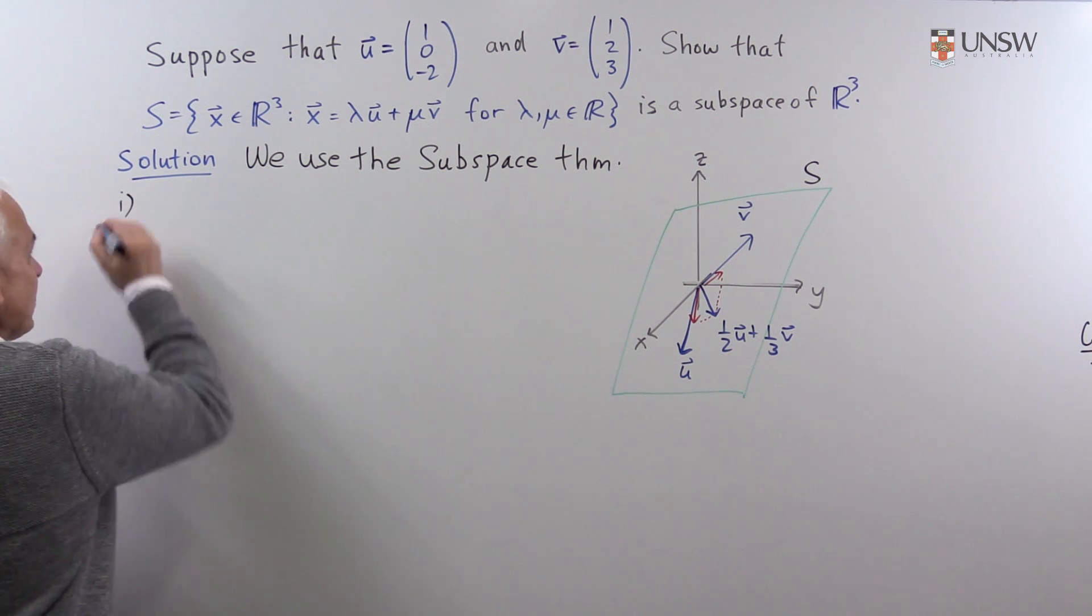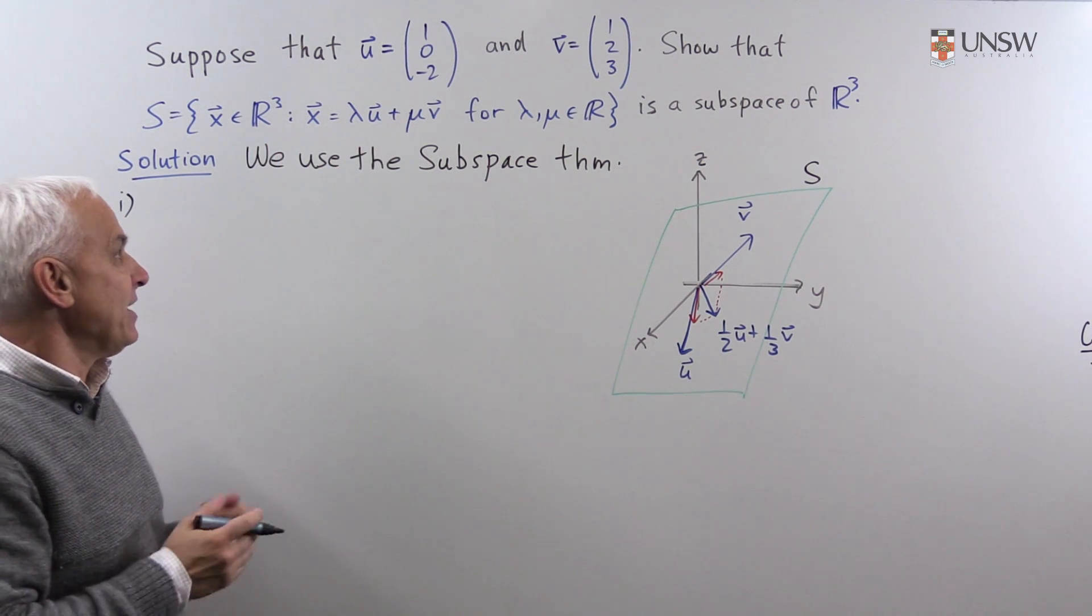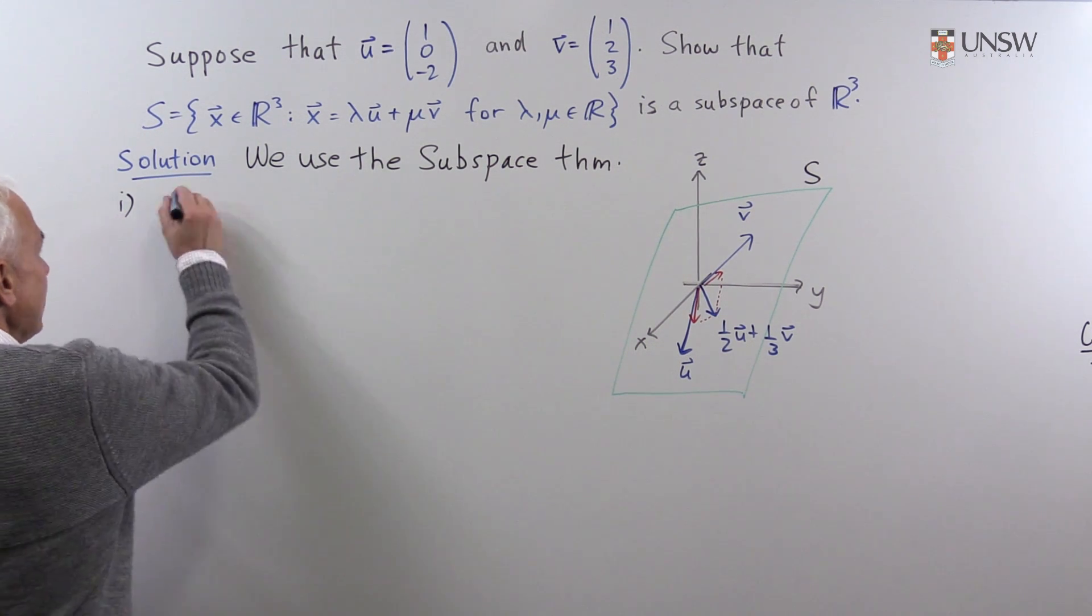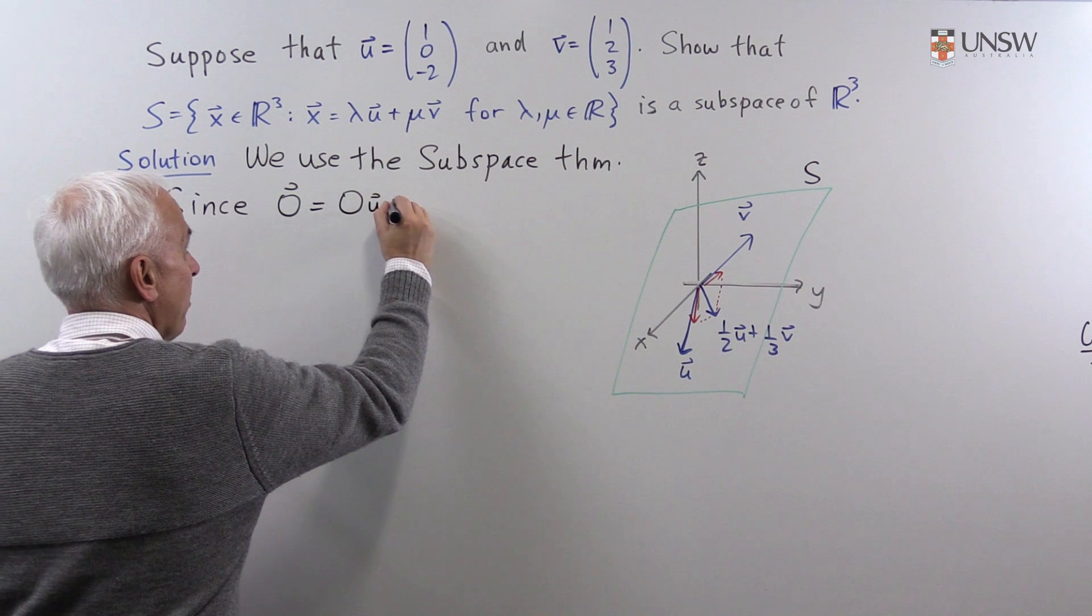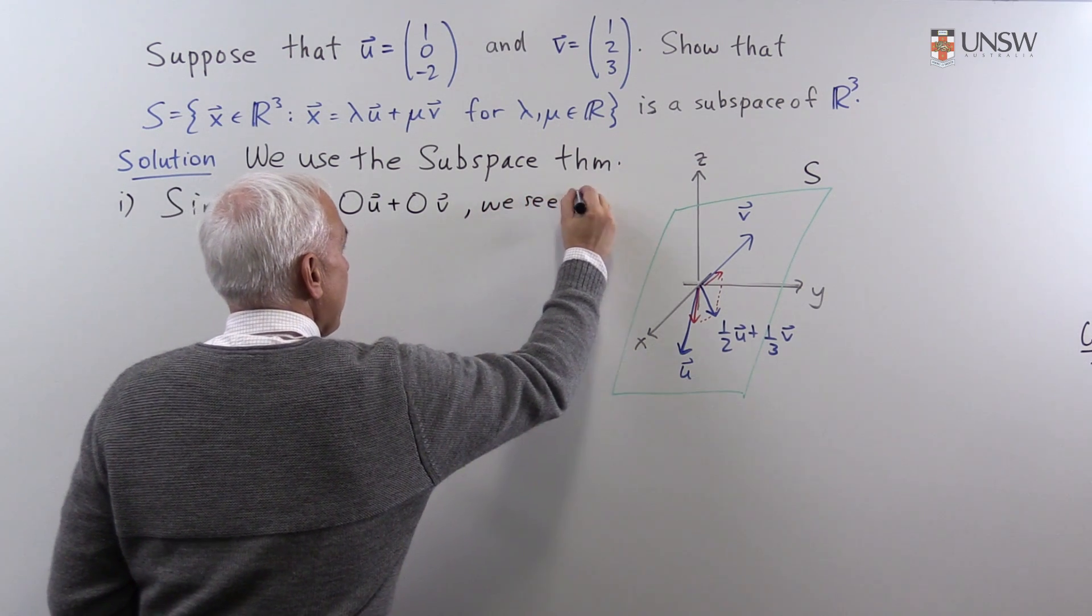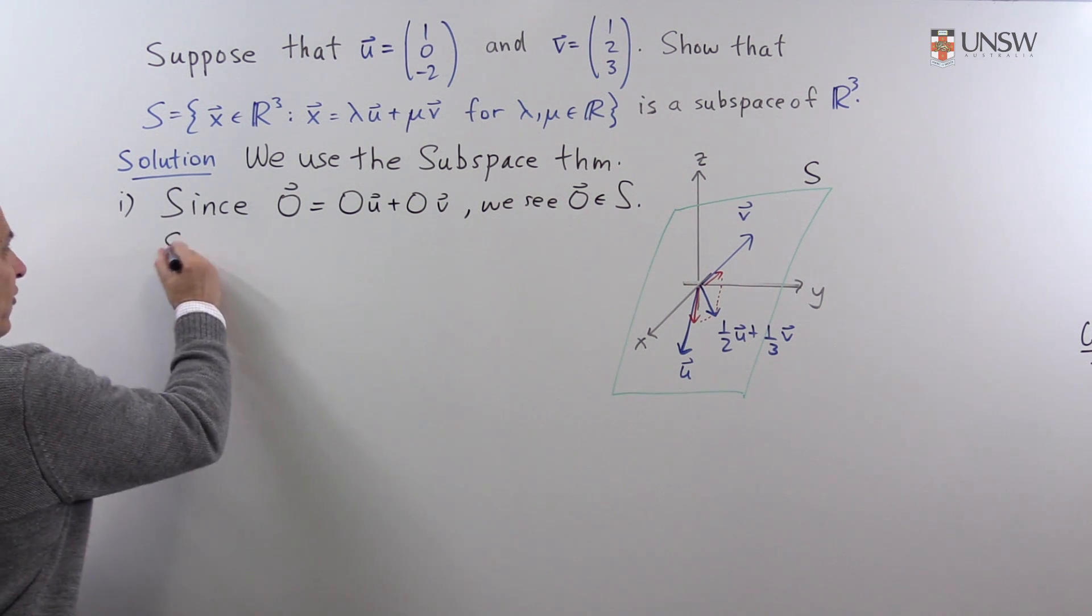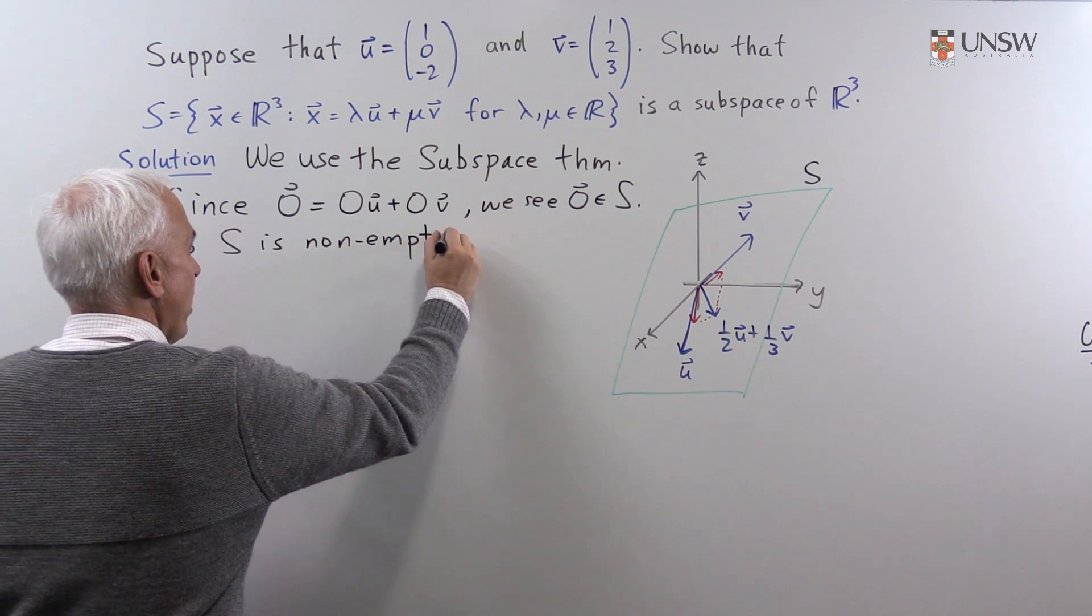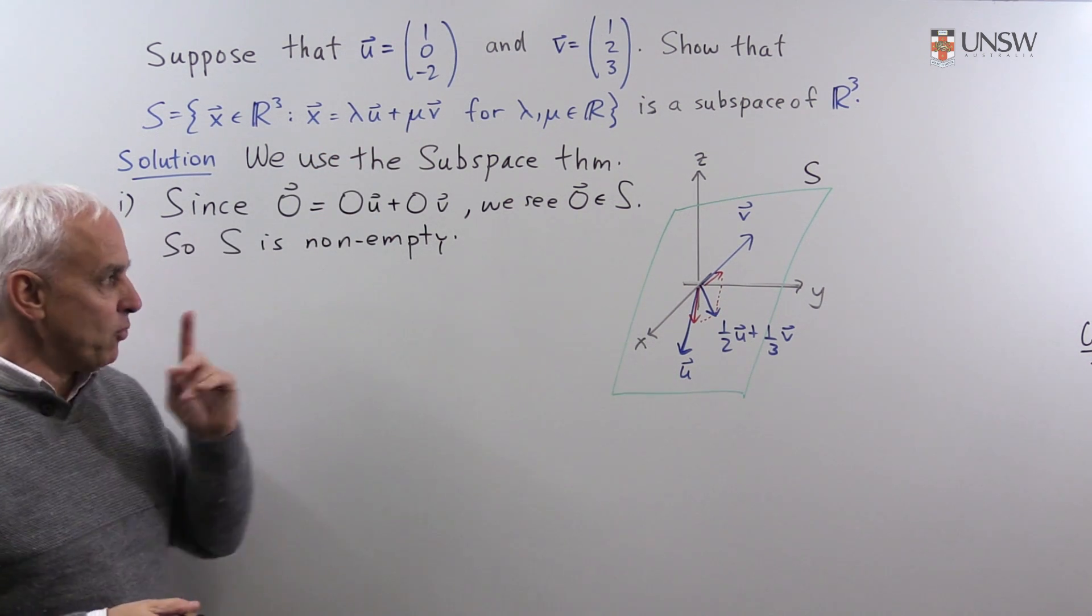All right, so let's start with the first condition. We want to show that the set is not empty. And the easiest way of doing that is to show that the zero vector is in that set. So since the zero vector can be written as 0u plus 0v, we see that the zero vector is in the set S. So S is not empty. In fact, it also has u and v in it, but we only need one element to show that it's not empty.